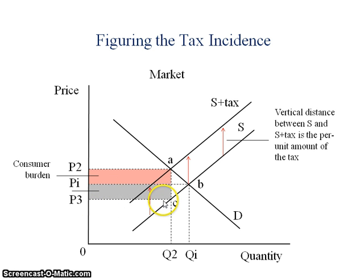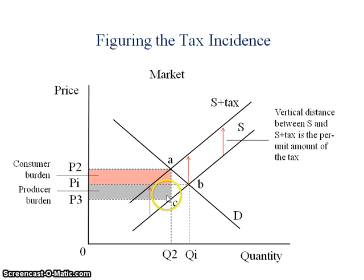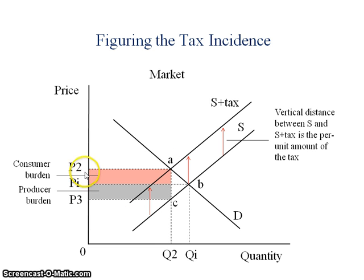To find the tax burden on the producer, we take the market price and find the difference between the market price and the amount that the producer gets to keep. This gray shaded area represents the burden on the producer. If we take these together, this rectangular area bounded by P3, C, A, and P2 gives us the total amount paid to the government after being collected by the producer.